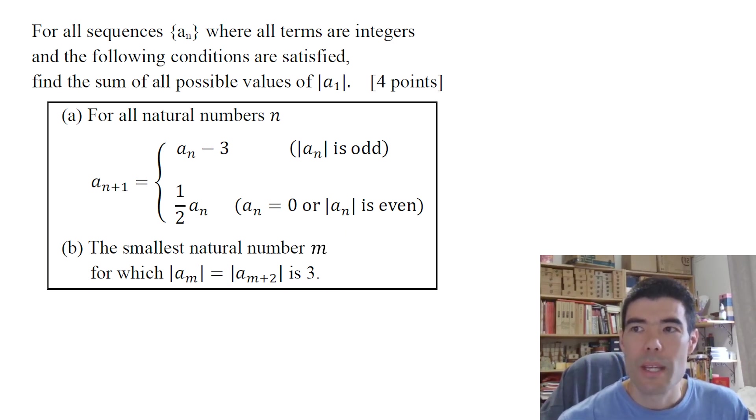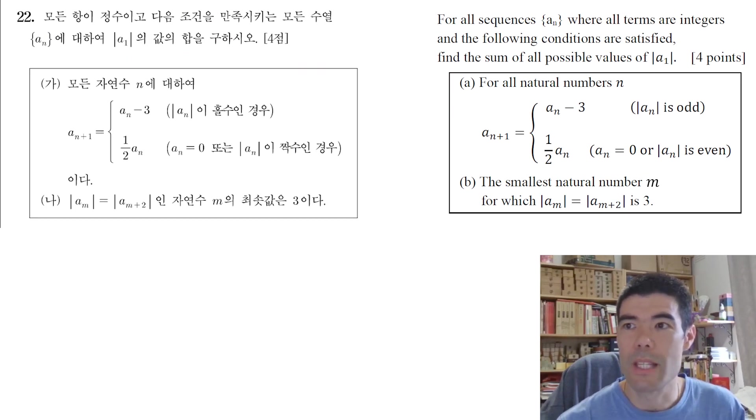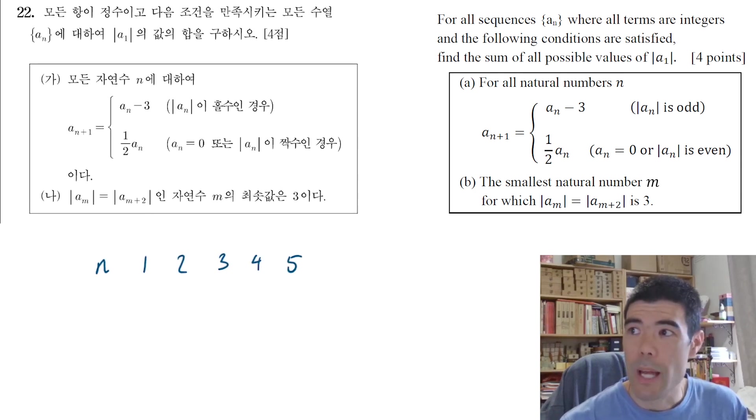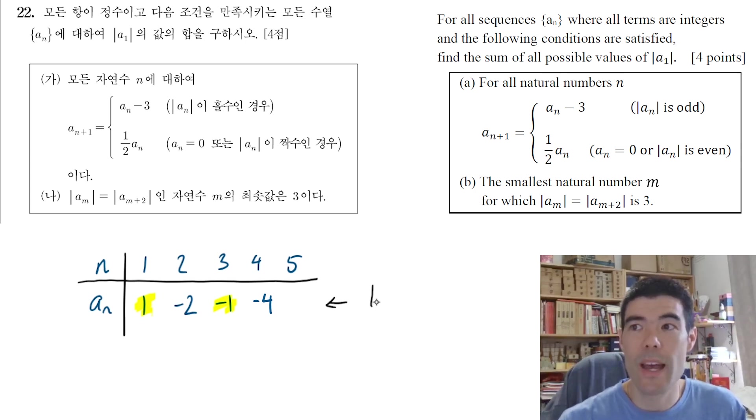So it took me a while to get my head around what the second condition was saying, but I think I'll demonstrate it by way of example. So if we take a_1, for example, if we just plug in a_1 = 1 and see what happens. So 1 is odd, so we subtract 3 to get the next term, which is negative 2. Negative 2 is even, so we half it to get the next term, negative 1. Odd again, subtract 3 to get negative 4. But here's where we have that second condition coming in. If we look at a_1 and a_3, they're actually equal in absolute value. So we're supposed to have a_3 and a_5 being equal in absolute value, but we're not supposed to have a_1 and a_3 being equal. So therefore, this sequence does not satisfy the conditions.